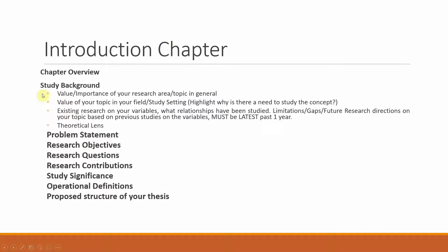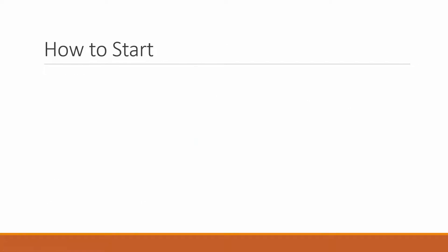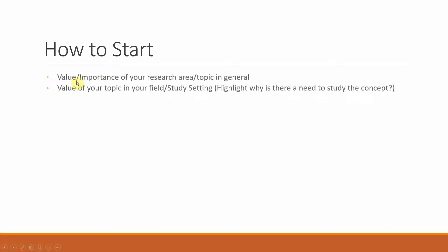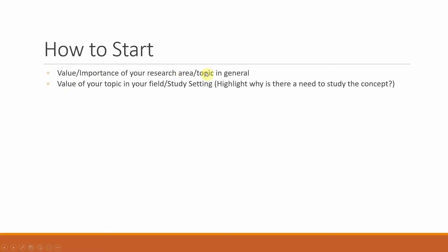This is a general overview of what should be included in your introduction chapter of a research thesis. How do you start your introduction chapter? We have mentioned that we write about the value and importance of the area or topic in general, and we talk about the value of the topic in the field of study, or if we are focused on a particular study setting, we write about how this particular topic is important in that setting. But still students get confused as to how to start writing — where shall we start?